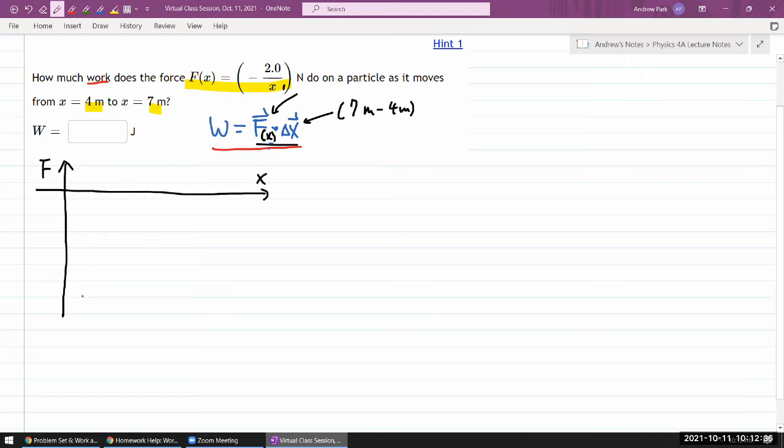It's going to look something like one over x, just negative. And it's going from a position of x equals four meters to x equals seven meters.